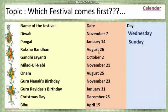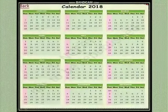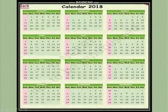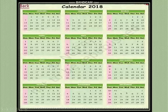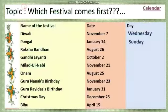Then Raksha Bandhan on August 26th. Let's see — August 26th. July, August — August is there. Now day 24th, 25th, and here 26th. Which day? Sunday. So August 26th is Sunday.